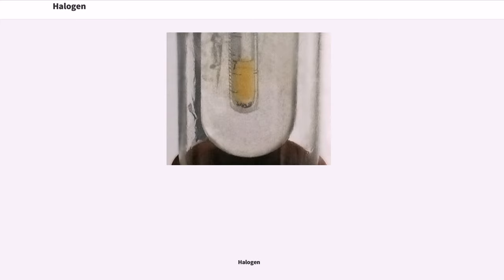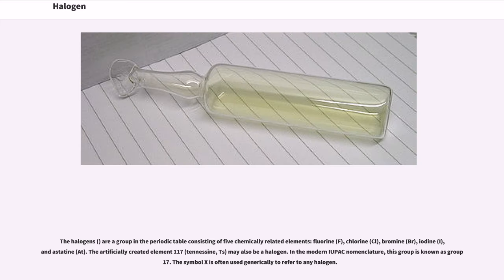Halogen. The halogens are a group in the periodic table consisting of five chemically related elements: fluorine (F), chlorine (Cl), bromine (Br), iodine (I), and astatine (At). The artificially created element 117, tennessine (Ts), may also be a halogen. In the modern IUPAC nomenclature, this group is known as group 17.